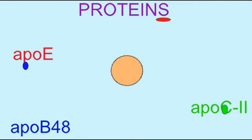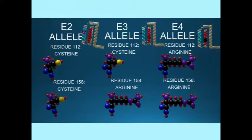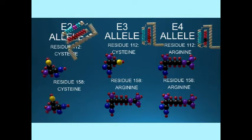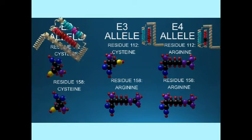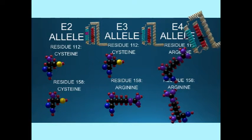There are 299 amino acids in the apolipoprotein E protein, thus there is great possibility for variations which exist in human populations, and multiple alleles are known. Three alleles are common and are designated as the E2 allele, E3 allele, and E4 allele.